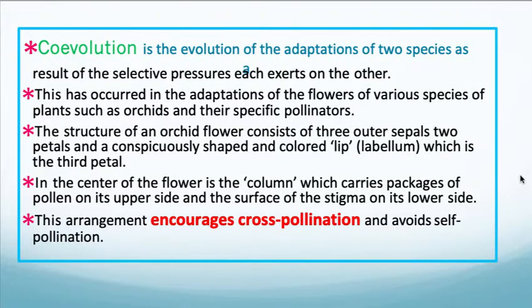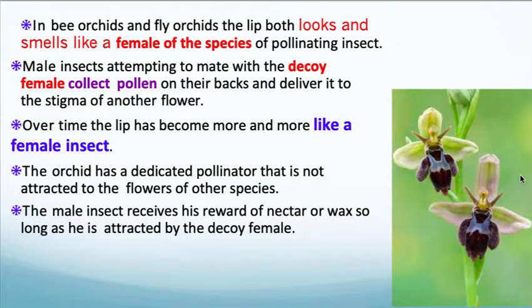This arrangement encourages cross-pollination and avoids self-pollination. In bee orchids and fly orchids, the lip both looks and smells like a female of the species of pollinating insect. Male insects attempting to mate with the decoy female will collect the pollen on their backs and deliver it to the stigma of a different flower.